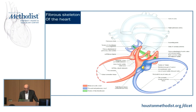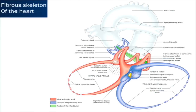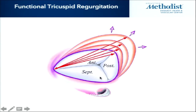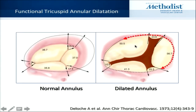Looking at the fibrous skeleton of the heart with the valves cut away, this explains why the valve dilates in the direction that it does. This is the tricuspid annulus, and the central fibrous body with the septal leaflet attached to this portion. That's why you don't get dilatation in that segment, but you do get it on the anterior and posterior sides, where you see the greatest increase in dimension.